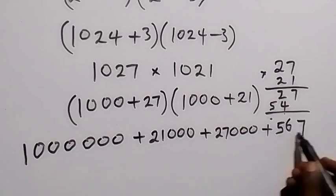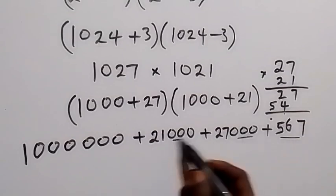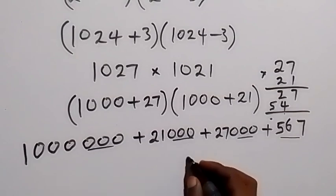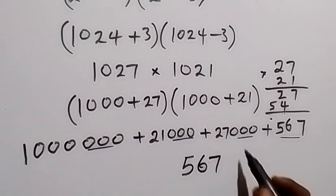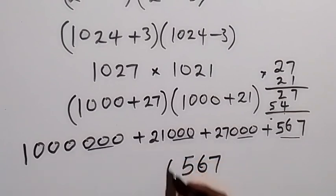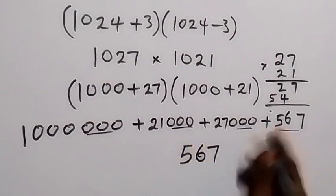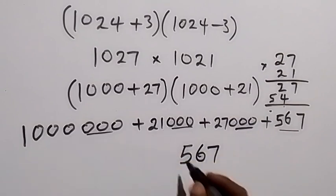When we add the last three digits, we still have 567. Then the next digit has zeros, so that's zero. Wait, that's not zero. The next digit, we have 7 plus 1, which is 8.